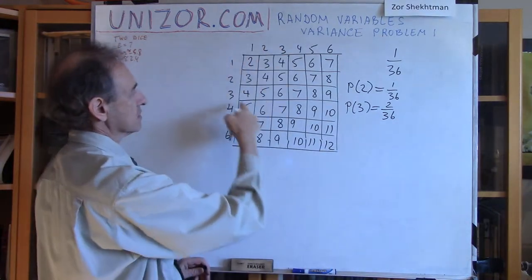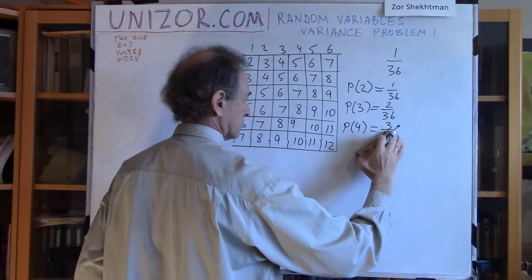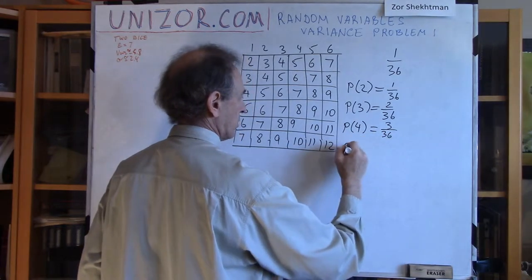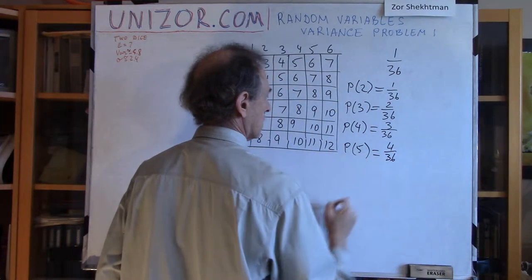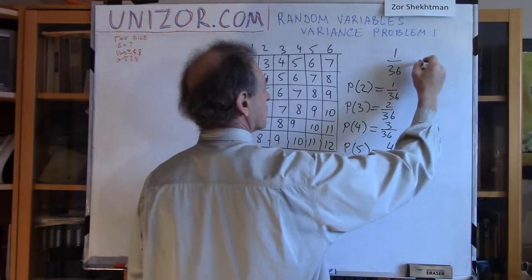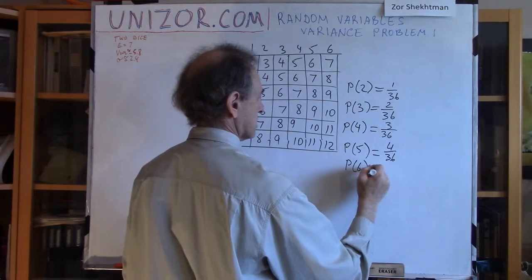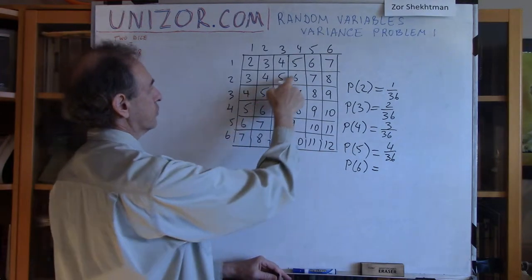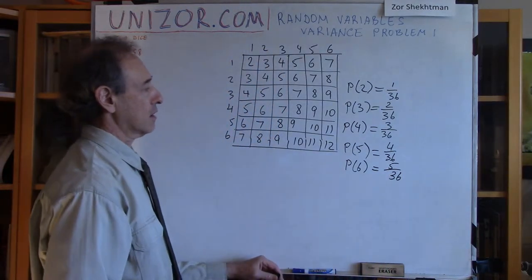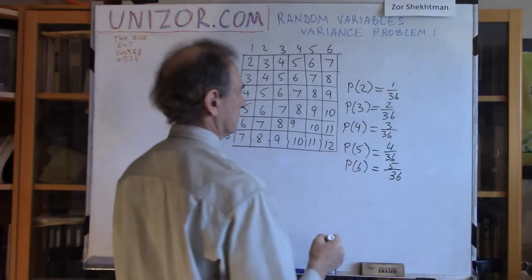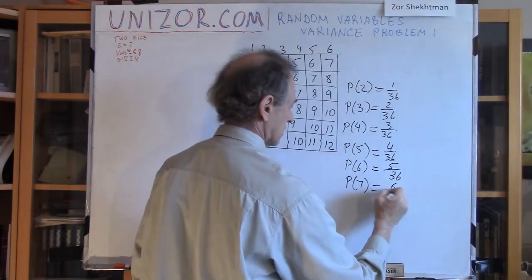The number 2 occurs only once, which means the probability of 2 is equal to 1/36. The probability of 3: there are two different squares in this matrix — either the first die rolls 2 and the second 1, or the first rolls 1 and the second 2. Each pair has probability 1/36, but we have two pairs, so the probability of 3 is 2/36. Number 4 occurs 3 times, so the probability of 4 is 3/36. The probability of 5 is 4/36. The probability of 6 is 5/36 — five different combinations, each with probability 1/36. The probability of 7 is 6/36.